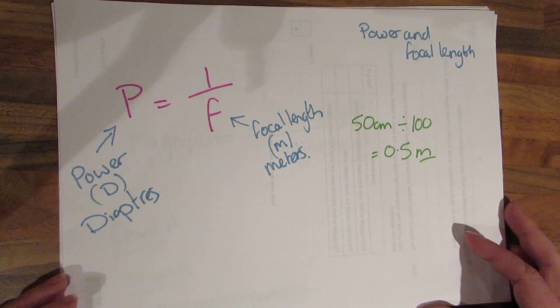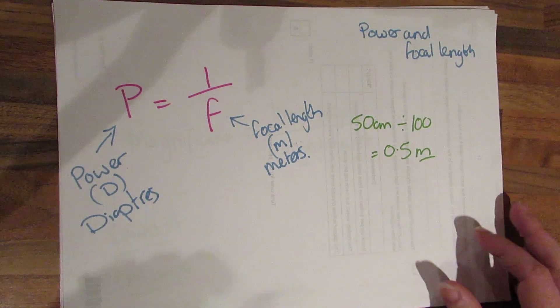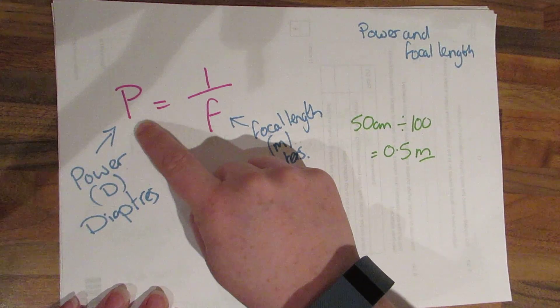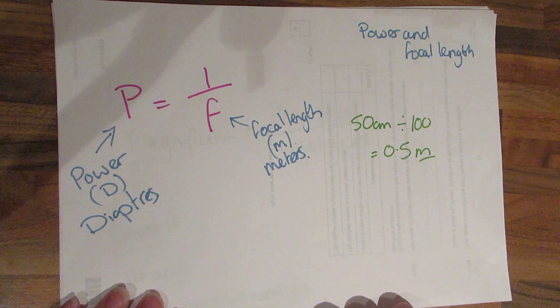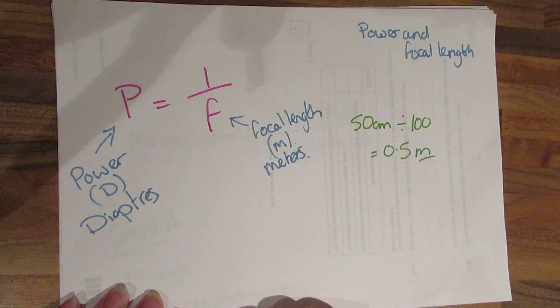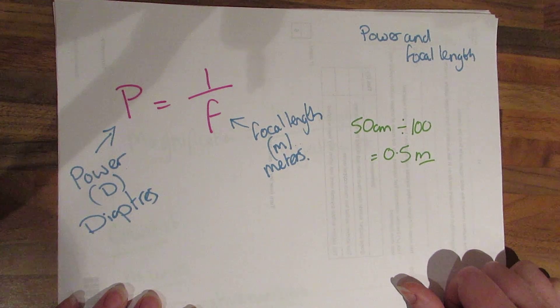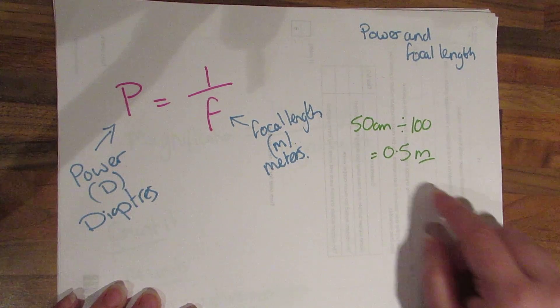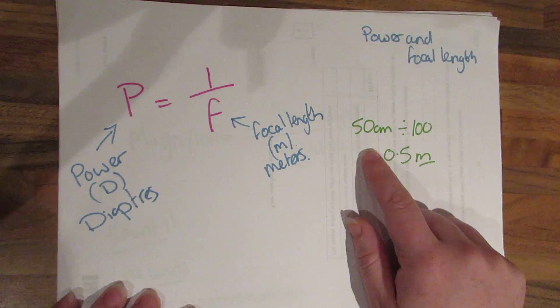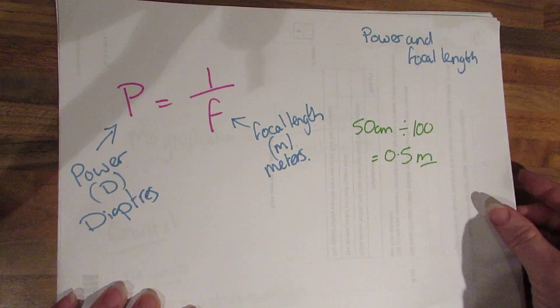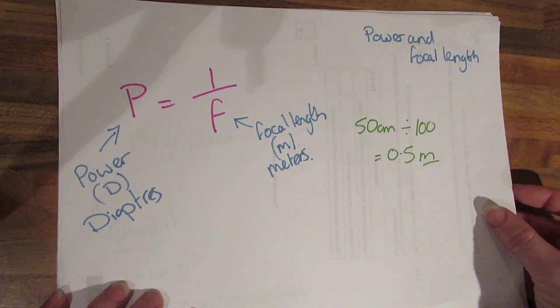You need to know how to calculate power and focal length. This is the equation that's on the formula sheet, this is power of a lens not to be confused with electrical power and this is measured in diopters. Then you just have one divided by the focal length which is in meters. Sometimes in the exam they might give you a number which is in centimeters, you have to convert this into meters. Easily done, just divide it by 100 but make sure you have the right units.